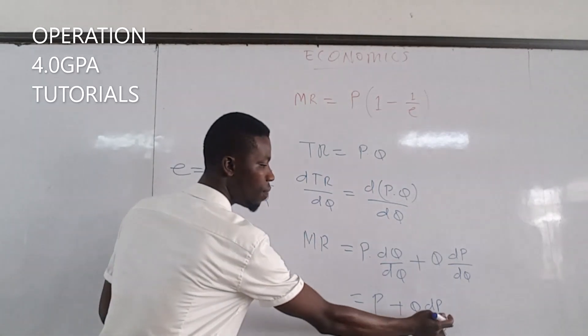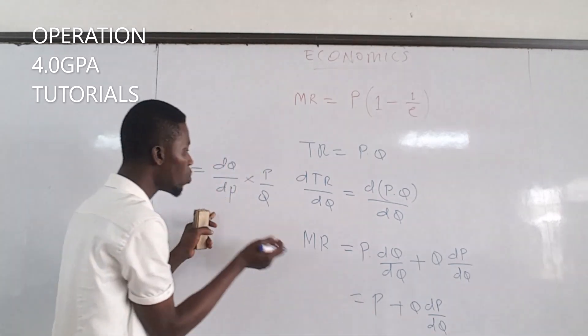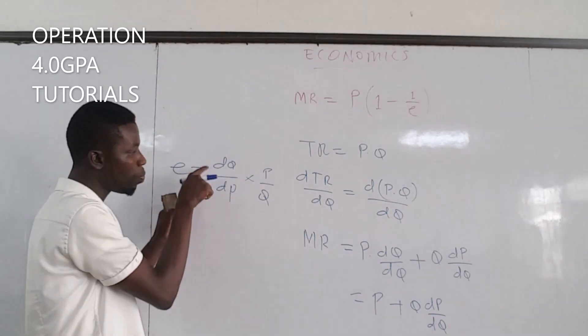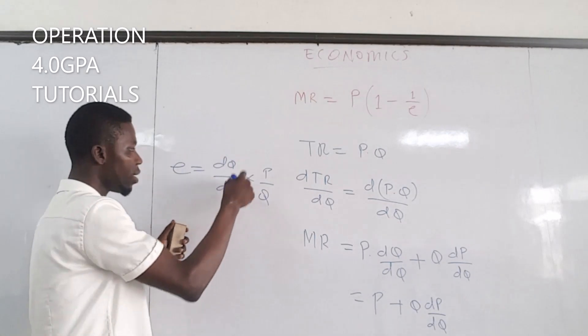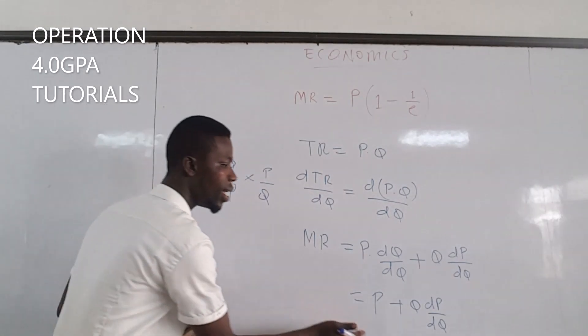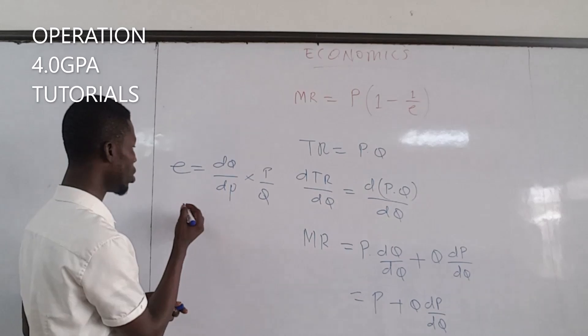But from the equation, we have dP over dQ. Meaning that we can change this dQ over dP into dP over dQ by making it the subject, changing it around, and then we come and put it back here. So let's do it.